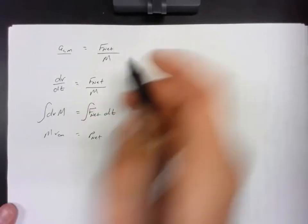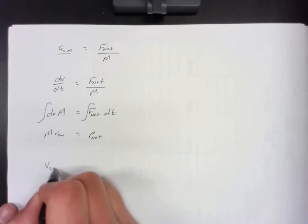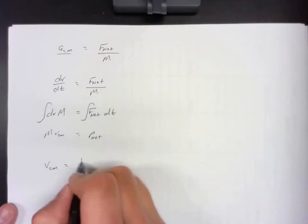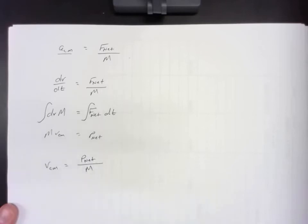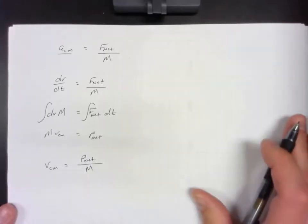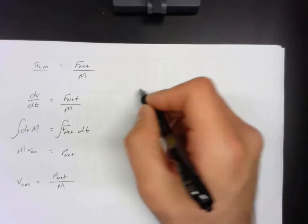So just like in this equation, the velocity of the center of mass would be equal to the net momentum divided by the net mass. And that's why that's important.